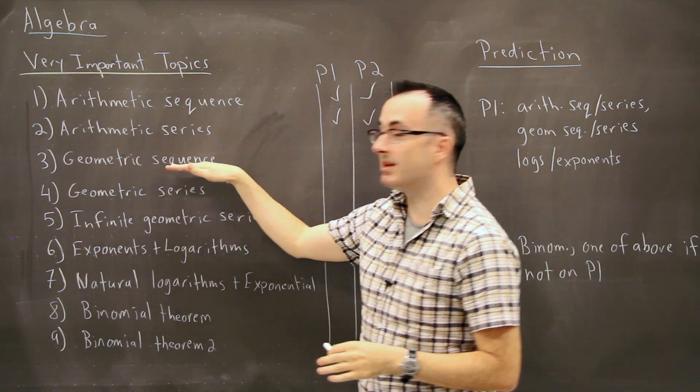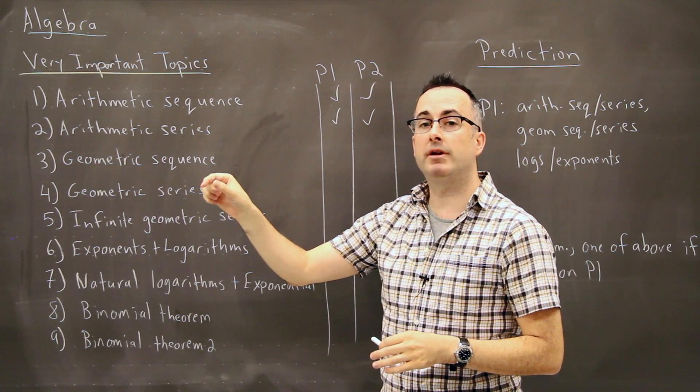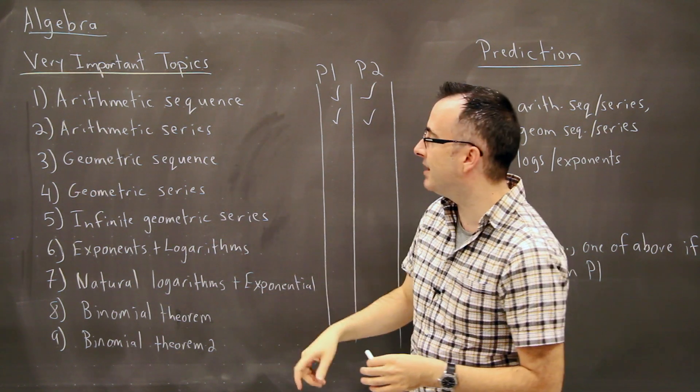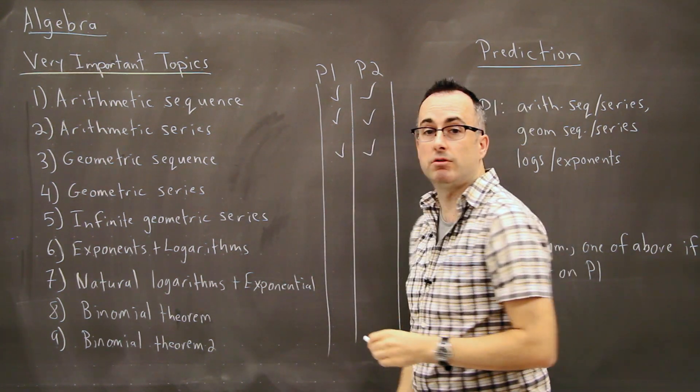Then you have Geometric Sequence. That's when you have a list of numbers, but their common is not a difference. It's actually a ratio. You're multiplying or dividing by something. So those ones show up also most often on Paper 1 and 2. You find them all over.